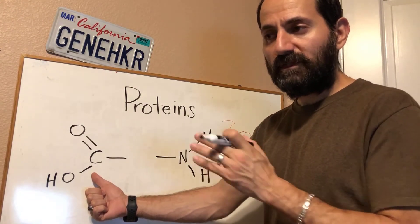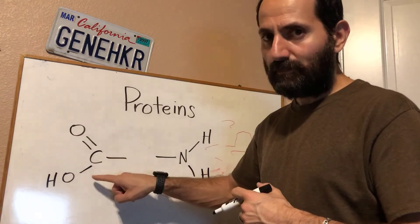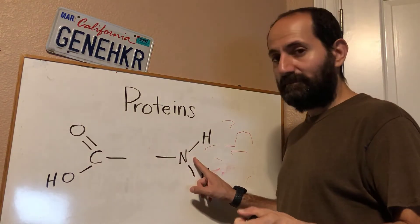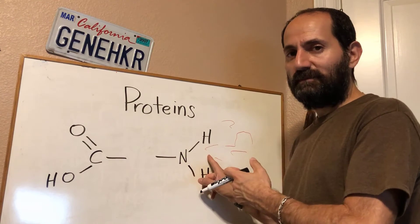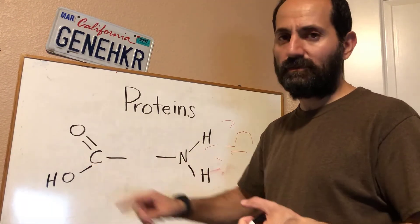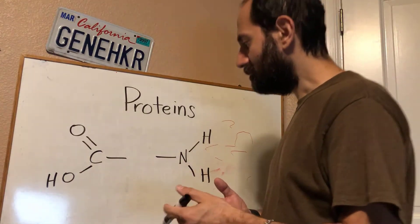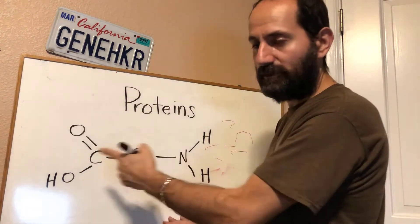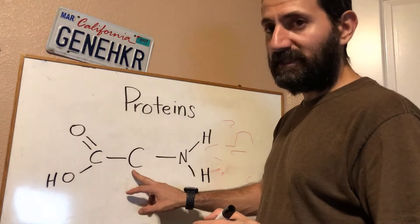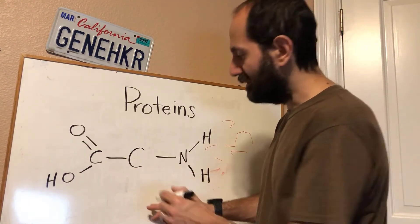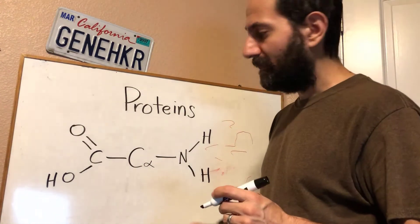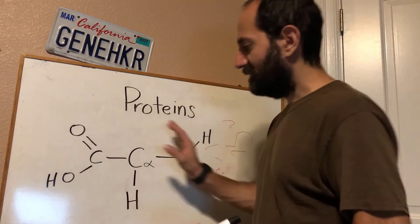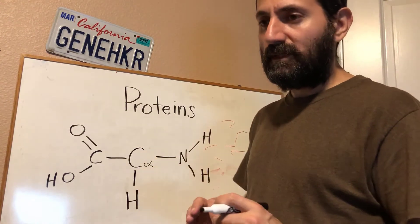The carboxyl group is an acidic functional group — that's why it's called an amino acid: 'amino' because you have an amino group, 'acid' because you have a carboxyl group. All amino acids also have a carbon in the middle called the alpha carbon, and that carbon always has at least one hydrogen attached. This is what's known as the backbone of an amino acid.